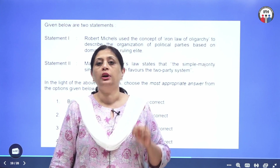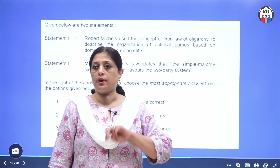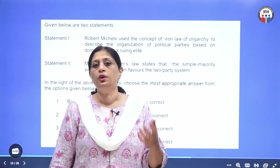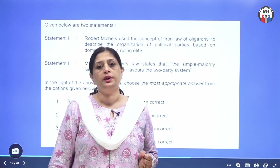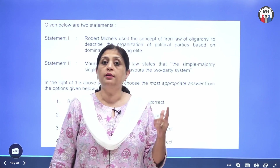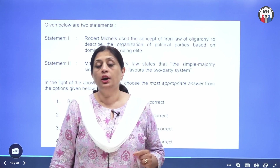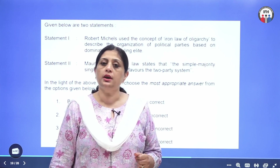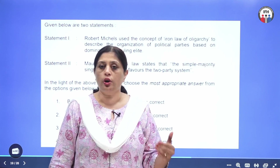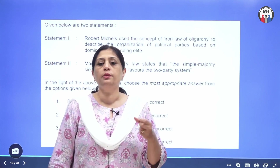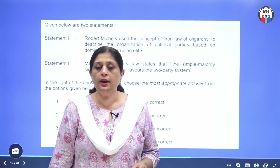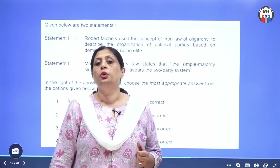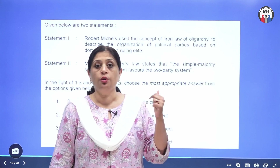Two more things you should know about Robert Michels and Duverger. Interestingly, the title of the book of both scholars is the same. Michels is famous for the only proven law in politics — the iron law of oligarchy — where he talks about how in a democracy power gets concentrated in the top layer of political parties.